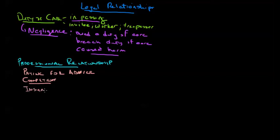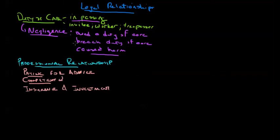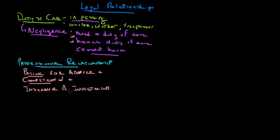This sets a higher standard than what we see under duty of care. Under duty of care, we had to demonstrate that a duty of care was owed and was breached. Here, with a professional relationship already established, we simply have to demonstrate that the person who provided the professional advice was not competent. That doesn't mean they have to be right — that's not the same as being right. There are times when it's okay to be wrong, and examples of that sometimes include interpretations of more complicated areas of the Income Tax Act.